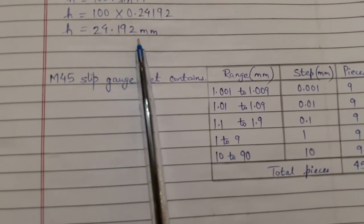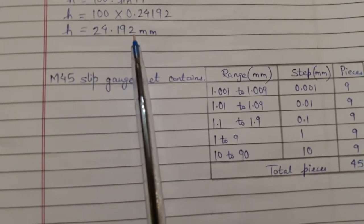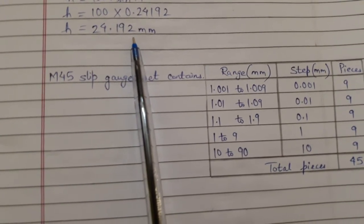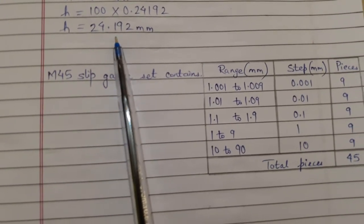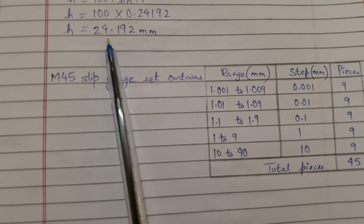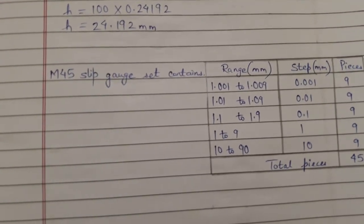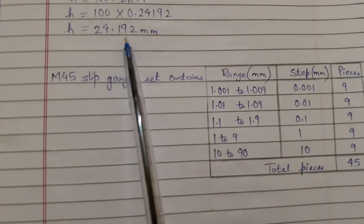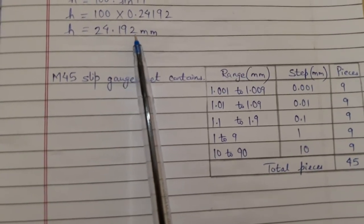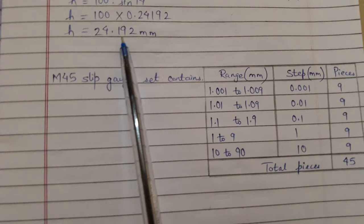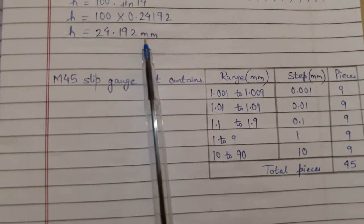Then second decimal place, first decimal place, ones place, and then the tens place. For example, here it is 0.192, so this is 0.002. We have to see here, we have the range 1.001 and the step is 0.001.